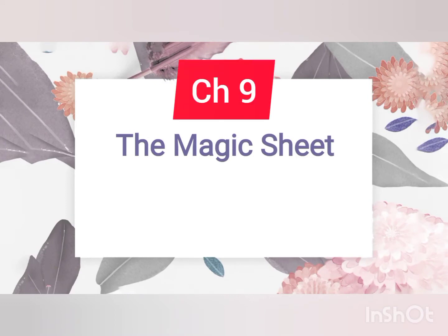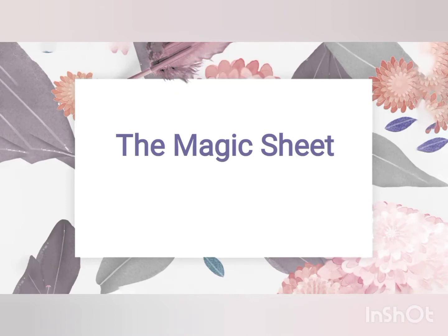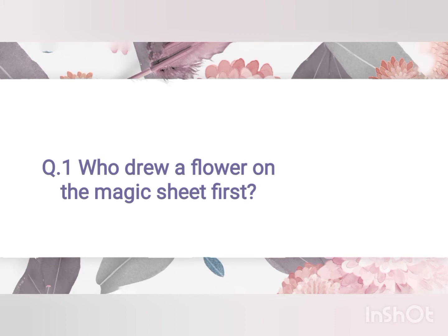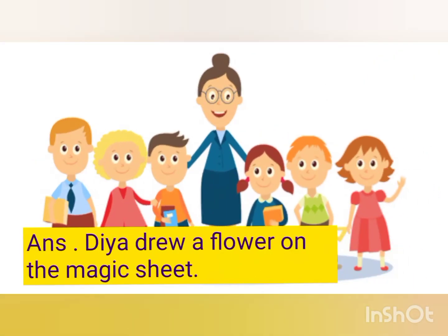It is chapter number 9 and we will be doing its revision today. Question number 1 is: who drew a flower on the magic sheet first? If you remember, Diyar, Rohan, Tina and Krish were playing in the park with a ball. Suddenly, Krish threw the ball too high and it disappeared behind the bushes. They found a sheet there, and Diyar took a colour and drew a flower on it. So the answer is: Diyar drew a flower on the magic sheet.